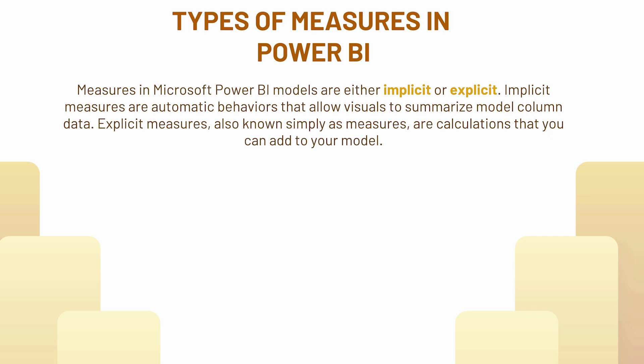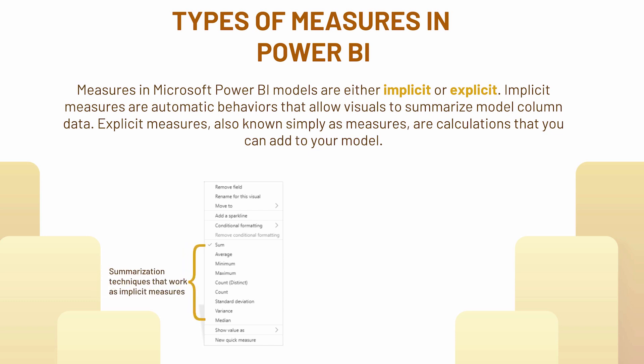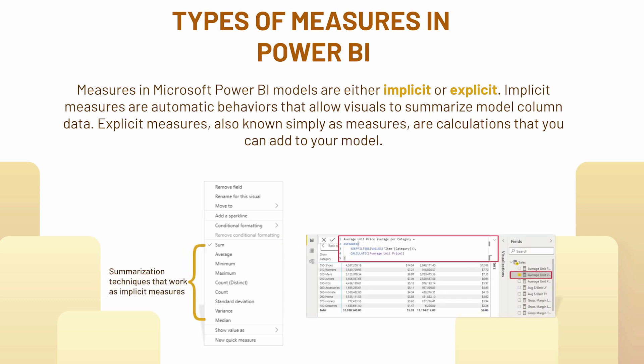Implicit measures are automatic behaviors that allow Power BI to summarize model column data — you don't need to do anything, though you can change them. Explicit measures, also known simply as measures, are calculations that you add to your model — you define those calculations according to your own logic using DAX. Here is an example of implicit measures which are already inside your data model. Explicit measures are those where you define your own logic or context using DAX, which is a formula-based language.